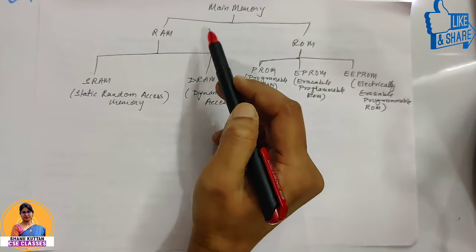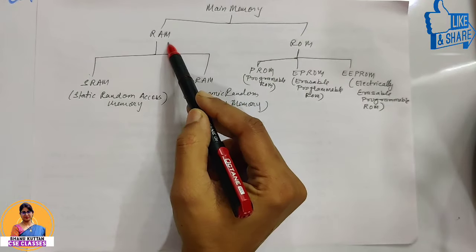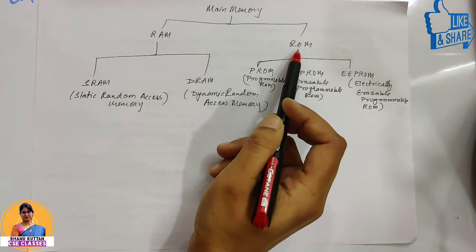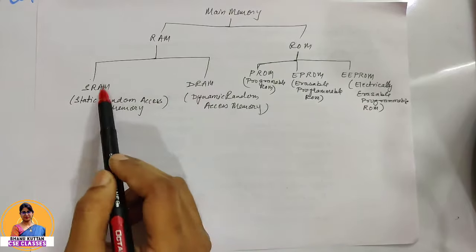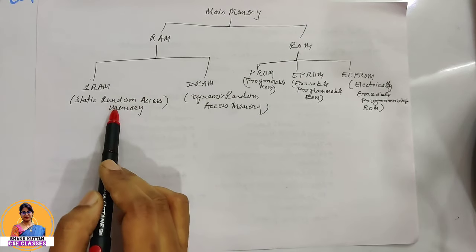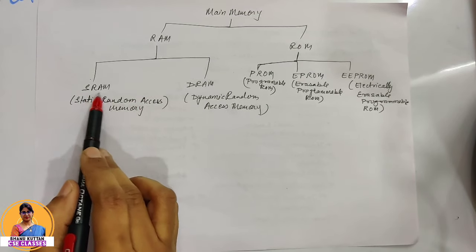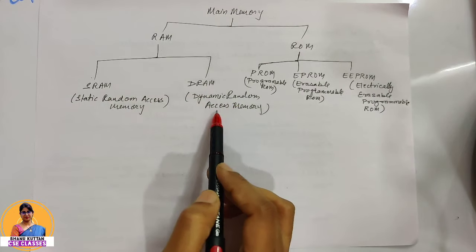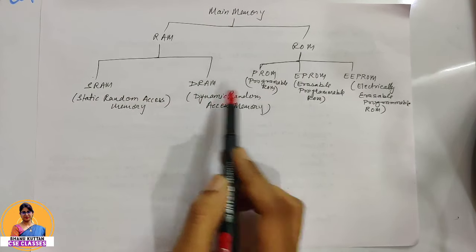In main memory, there are two categories: Random Access Memories and Read Only Memories. In RAM, there are two further categories: Static Random Access Memory (SRAM) and Dynamic Random Access Memory (DRAM).